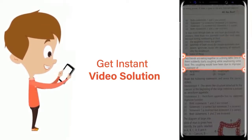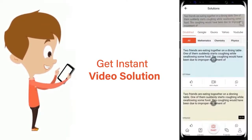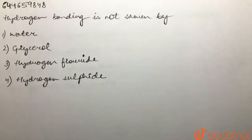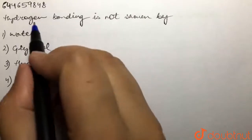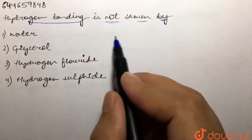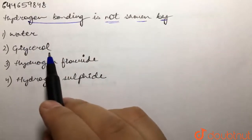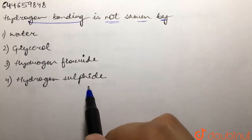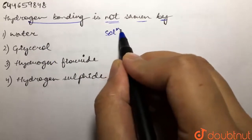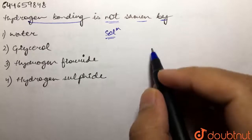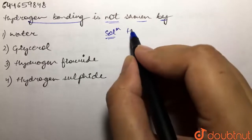Our question is: hydrogen bonding is not shown by which of the following? We are given water, glycerol, hydrogen fluoride, and hydrogen sulfide. We are supposed to tell which of the following does not show hydrogen bonding.